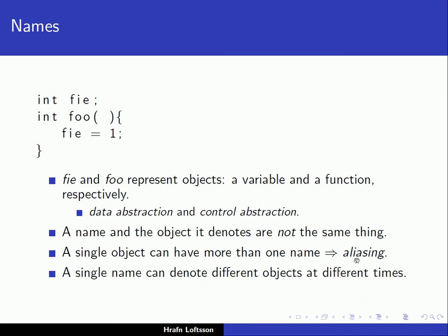Notice also that a single object can have more than one name, and this is called aliasing. One example is when we have two pointers pointing to the same location. In that case, the single object — the memory location — has more than one name; it has two pointers to it.